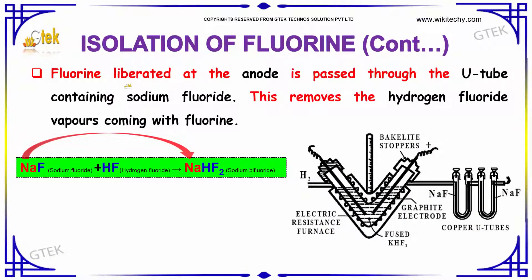Fluorine liberated at the anode is passed through a U-tube containing Sodium Fluoride. This removes the Hydrogen Fluoride vapors coming out with the Fluorine. Sodium Fluoride reacts with Hydrogen Fluoride to give Sodium Bifluoride.